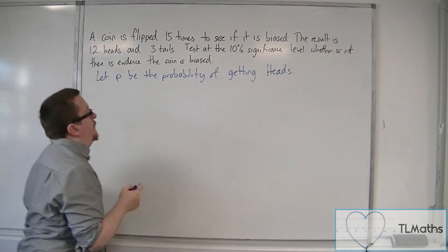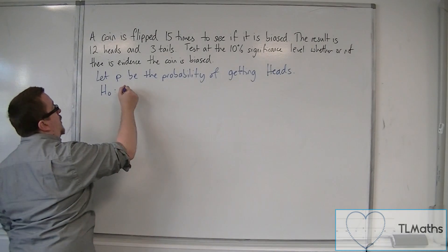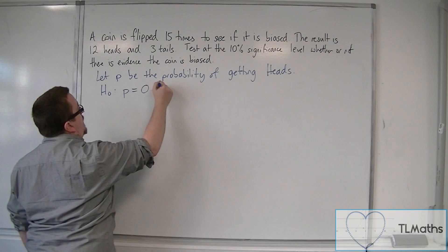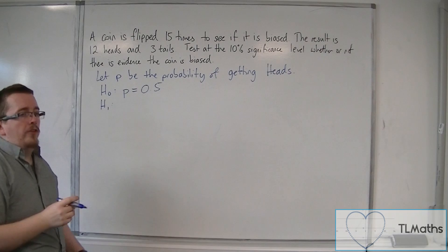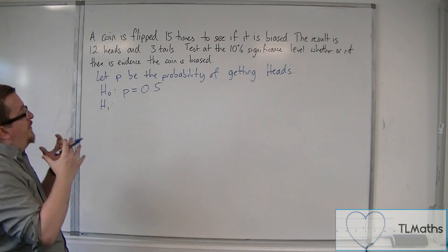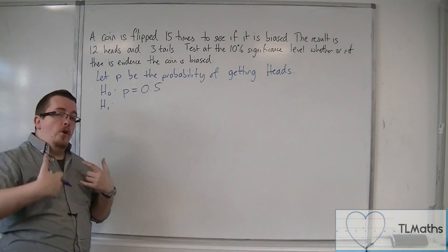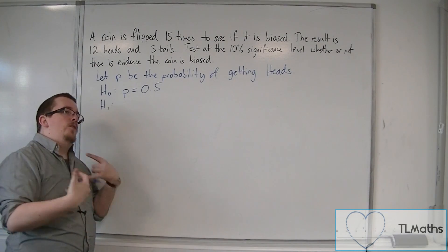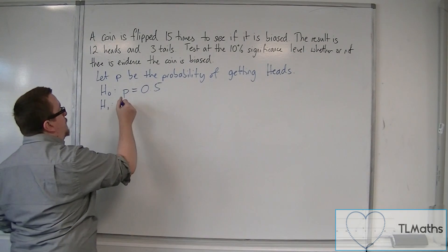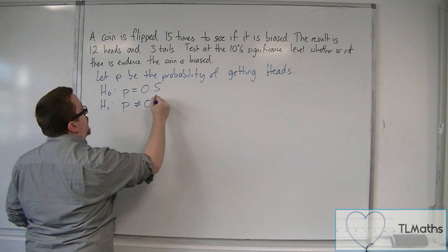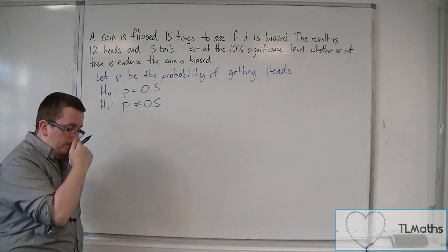Okay, so H0, the null hypothesis, would say that the coin is fair at 0.5. And our alternative hypothesis, because we're looking at a two-tailed test here, we want to determine whether there is evidence or not whether the coin is biased. Not saying whether we're particularly looking at whether heads or tails is more favourable. We would say that the probability is not equal to 0.5.